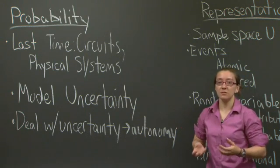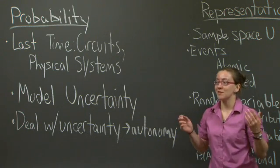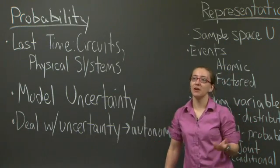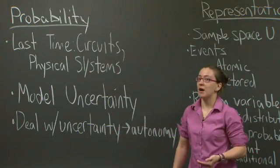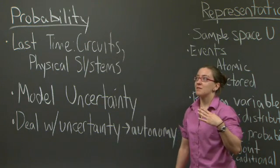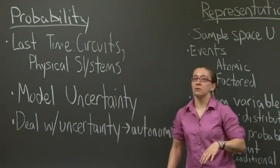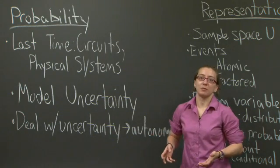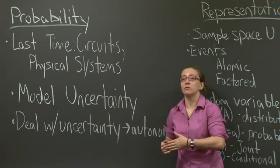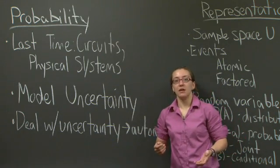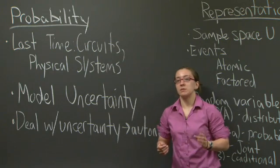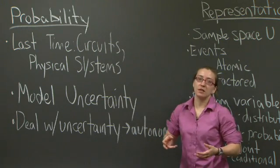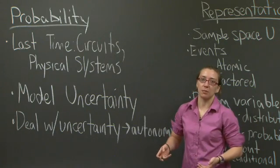If our systems are operating in a deterministic universe, then we're all set — we've accounted for all the things we can possibly account for. But if we're making systems that are going to operate in the real world, then we need to be able to deal with some level of uncertainty. Today I'm going to talk about probability, which is the method by which we're going to model uncertainty in our world. And later, we're going to talk about different strategies we can take to deal with that uncertainty, to hopefully increase the level of autonomy of our systems as they operate in the world.